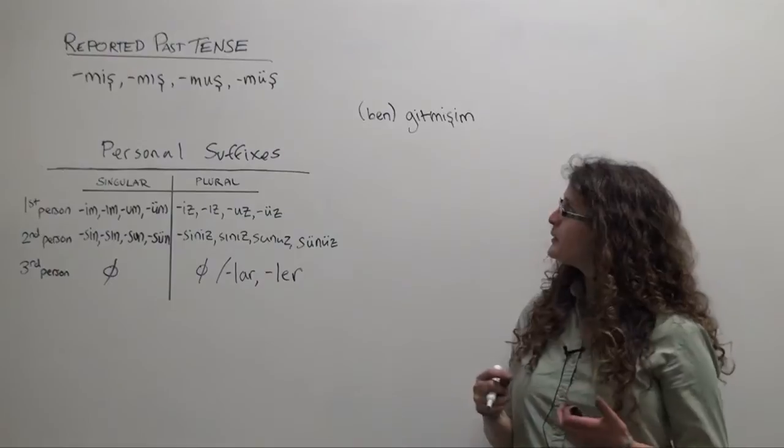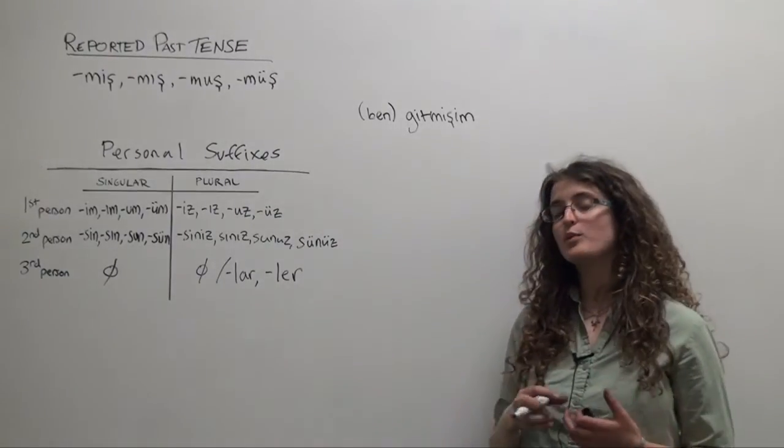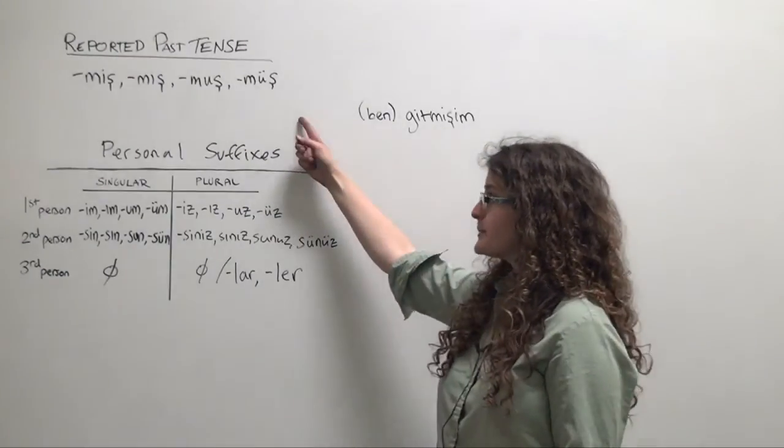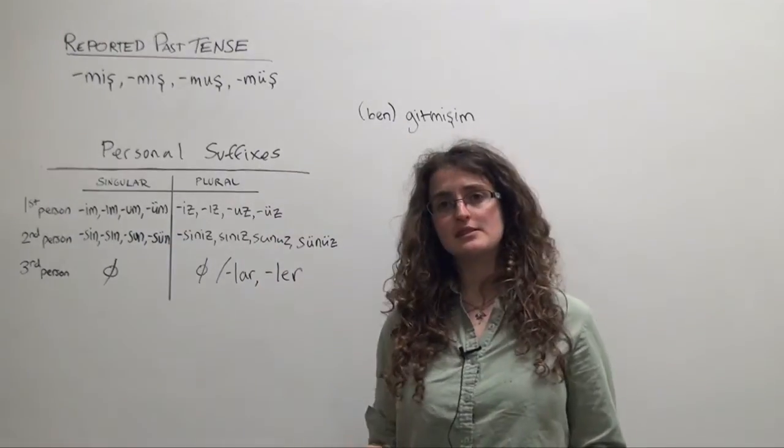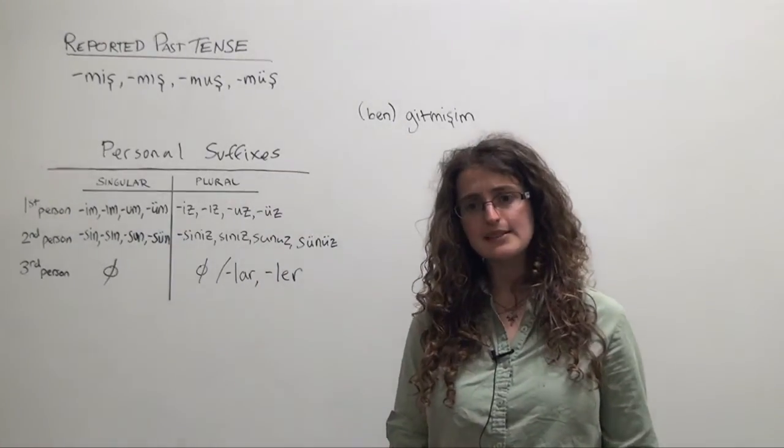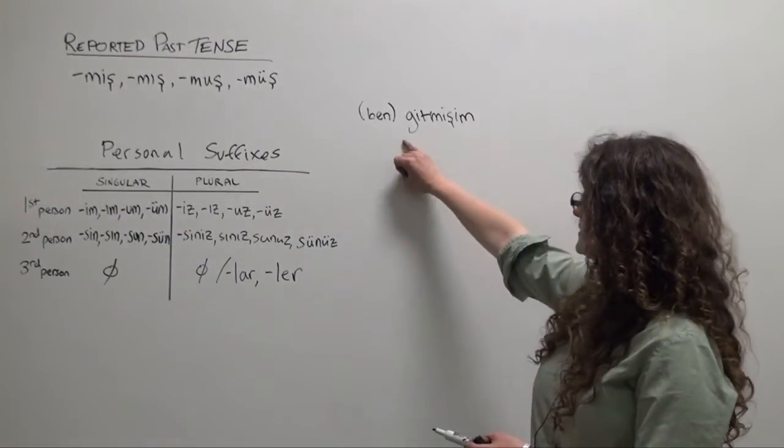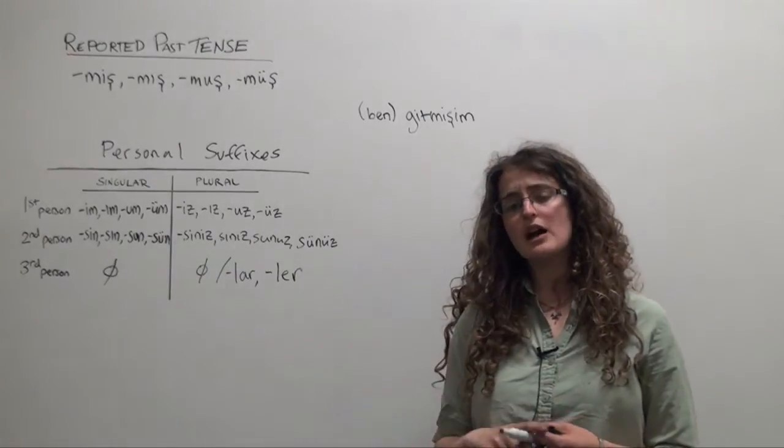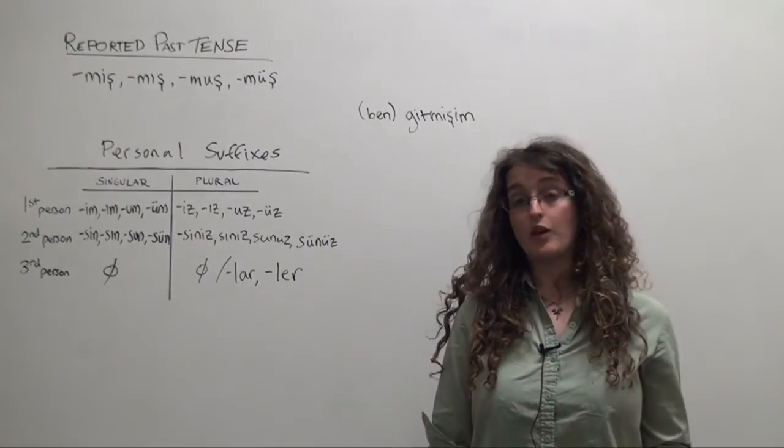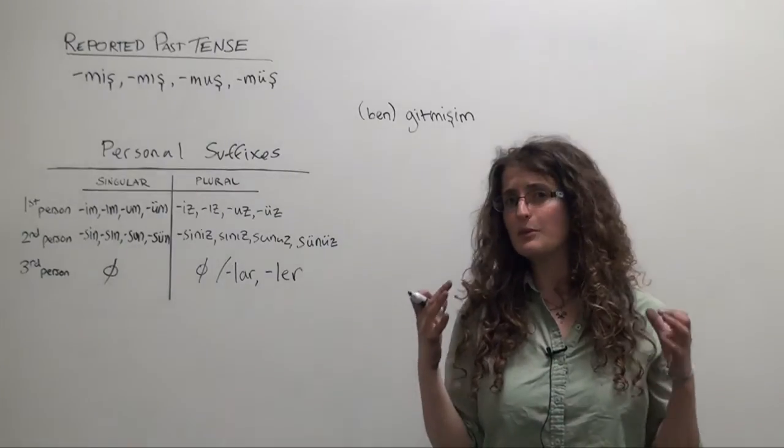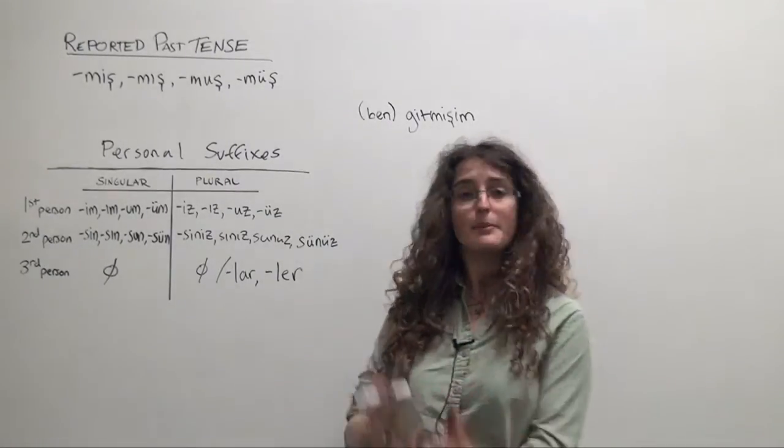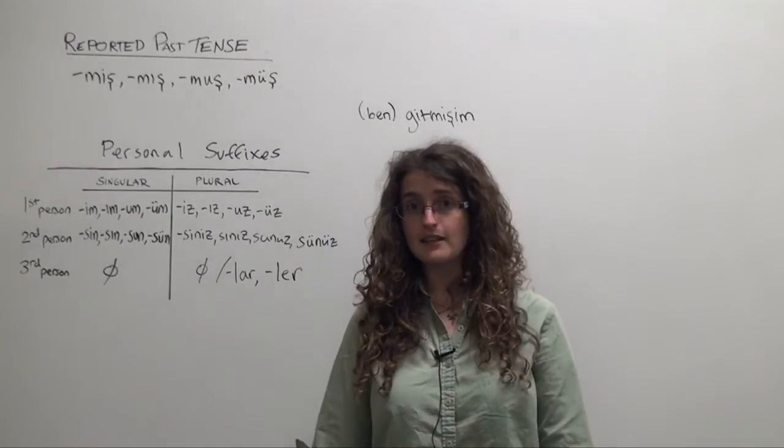Now you may be wondering why would you use the reported past tense for the first-person singular, apparently I went? Well, you'd use this ben gitmişim, for example, if you were describing a journey made when you were a baby and you don't really remember it at all, but apparently you did go. Your mother and father say that you did.